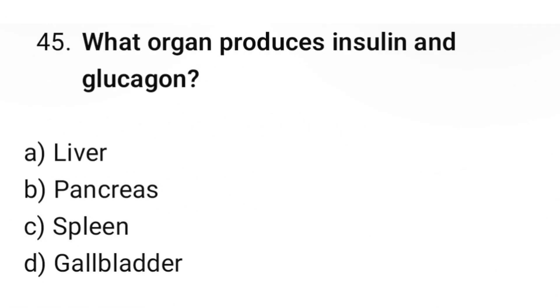Question number 45: What organ produces insulin and glucagon? The correct option is B. Pancreas.